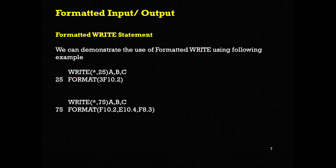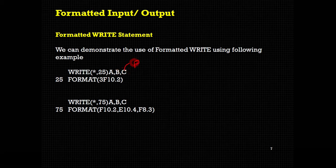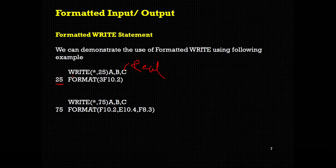Let us see some examples. Here it is written: write, then bracket star comma 25, then bracket close, a comma b comma c. So these are three variables a, b, c of real type. Now here, 25 is the statement number of the format statement. Fortran will find a statement having number 25, and in that statement it is written: format in bracket 3f10.2. This means the format for printing a, b and c — since there are three variables, we have written three. So 3f10.2 is the format for printing these values.